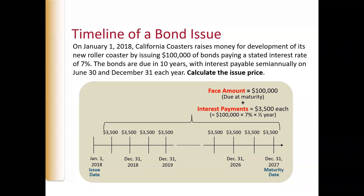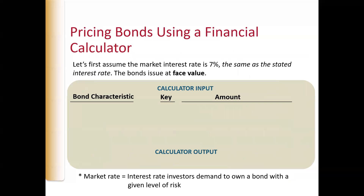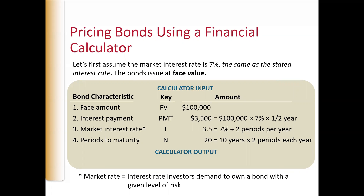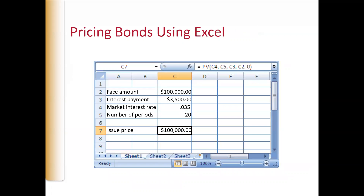What really matters with a bond is what's the market rate. If the stated interest rate, which is on the bond, is one price, and the market rate is the same rate that is on the bond, then it's really easy. If the market rate is 7% and the stated interest rate is 7%, then you're going to issue those bonds at the face amount — at the $100,000 — because they're the same. Investors will pay $100,000 to buy this bond. The market rate is what the market will bear.